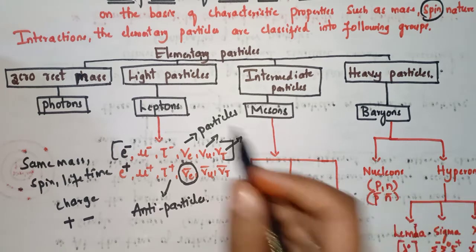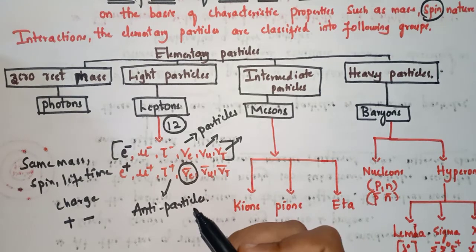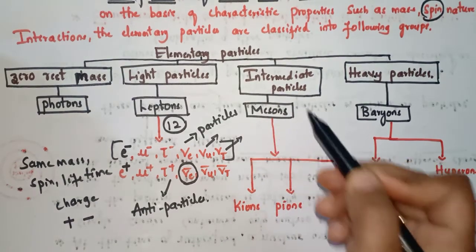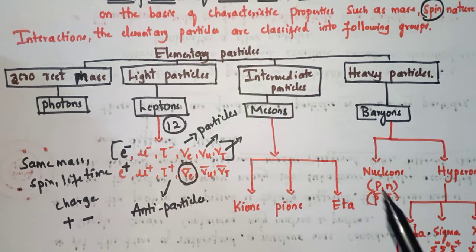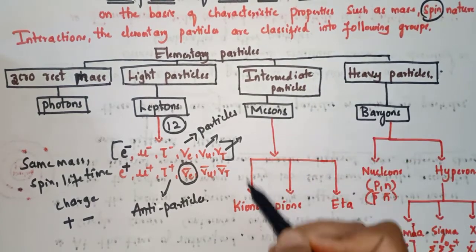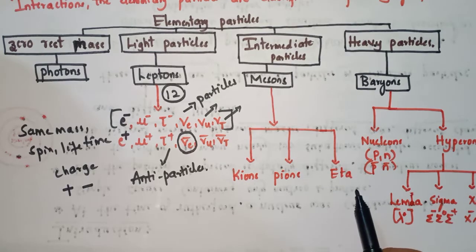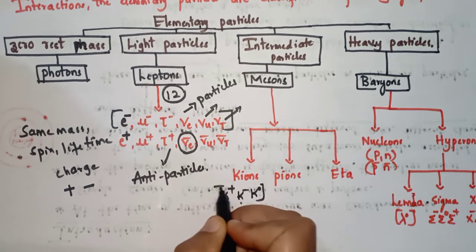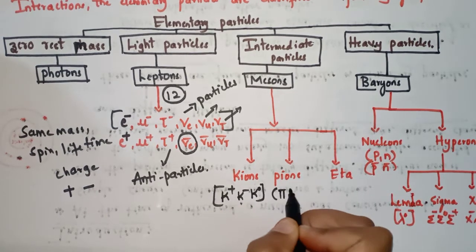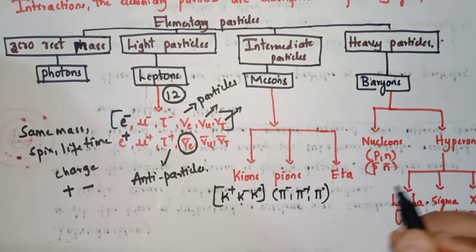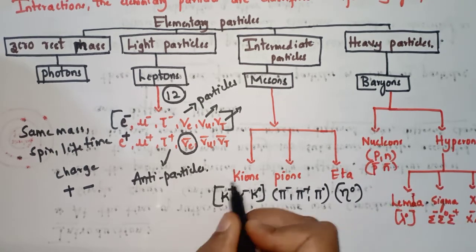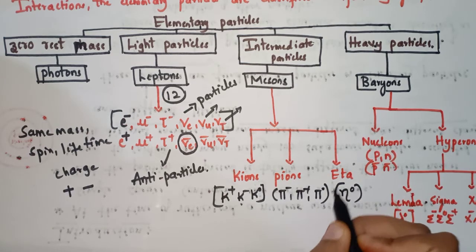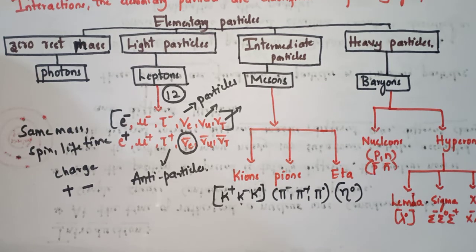Leptons are thus classified into 12 particles in total. Now coming to the intermediate particles — intermediate particles are mesons. Mesons are classified into three types: kaons, pions, and eta. Kaons are of three types: K+, K−, and K0. Pions are of three types: π+, π−, and π0. For eta there is only one: η0.